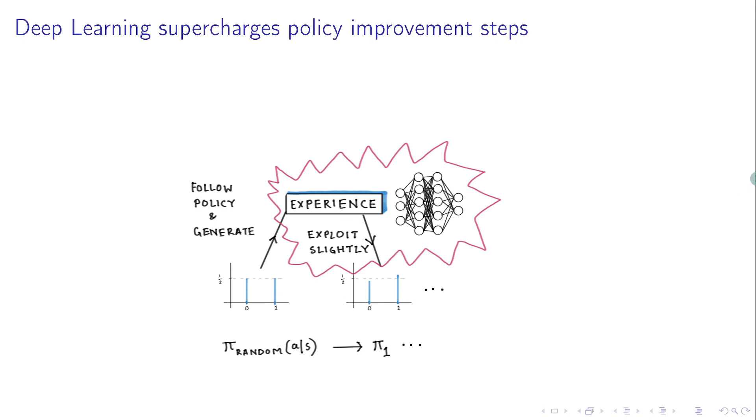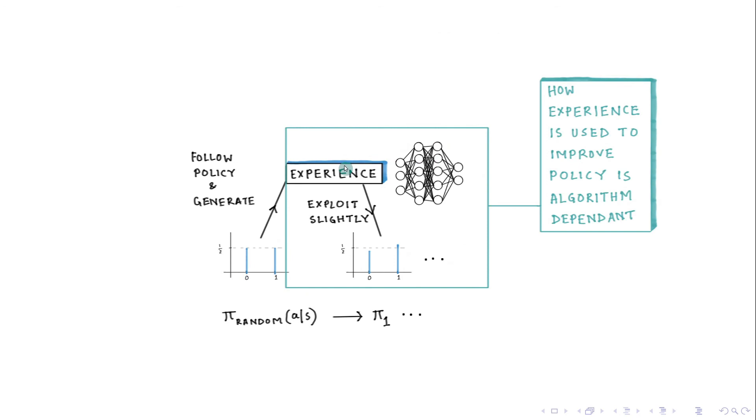So that completes our high level description of reinforcement learning algorithms or deep reinforcement learning algorithms as well. And they will all follow the scheme of policy improvement. However, how the experience is used to slightly improve the policy, that is algorithm dependent. So different algorithms like PPO, DQN, or MuZero will do this step slightly differently.